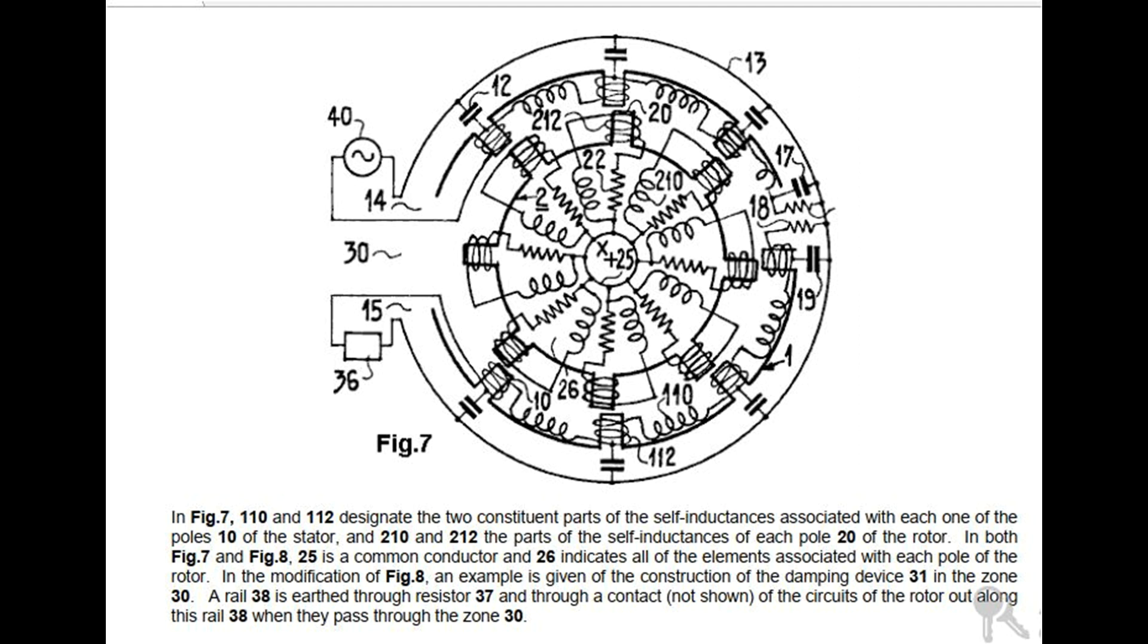In both Fig 7 and Fig 8, 25 is a common conductor and 26 indicates all of the elements associated with each pole of the rotor. In the modification of Fig 8, an example is given of the construction of the damping device 31 in zone 30. A rail 38 is earthed through resistor 37, and the circuits of the rotor short along this rail 38 when they pass through the zone 30.